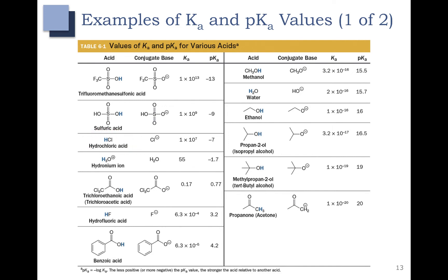Now let's look at the other side of the table — water, for example. Water is not considered a very strong acid. It has a Ka of 2×10⁻¹⁶ and a pKa of 15.7, which really isn't very acidic. We can use that as a good reference point: things below a pKa of 15.7 are going to be more acidic than water, and things above a pKa of 15.7 are going to be more basic than water.